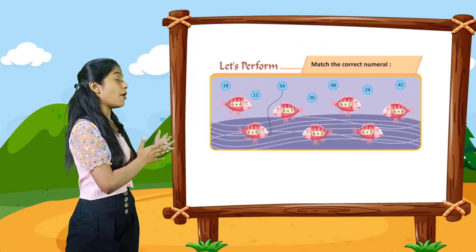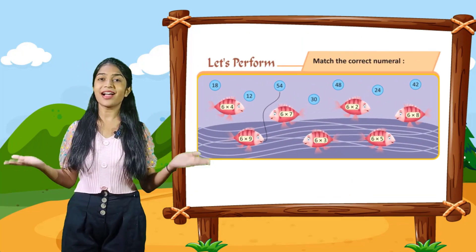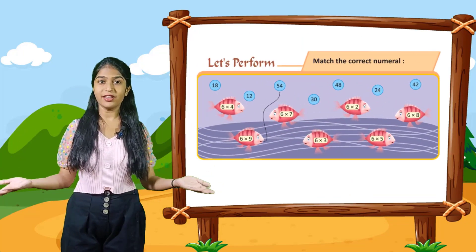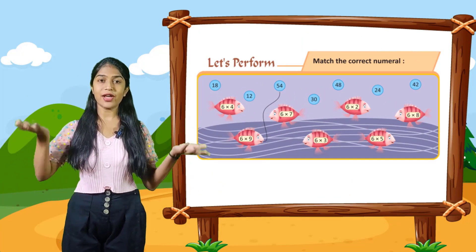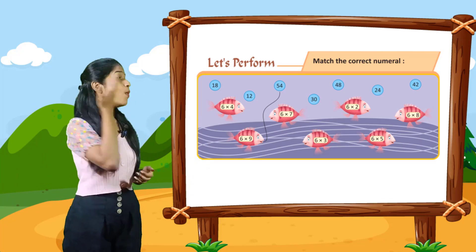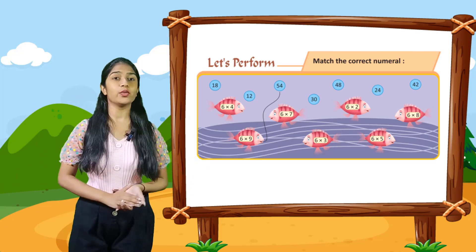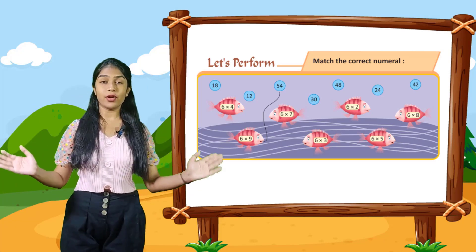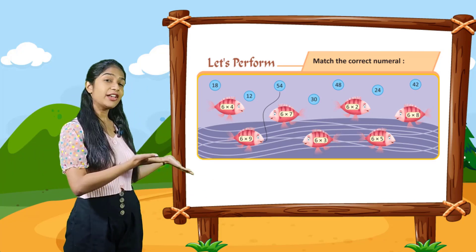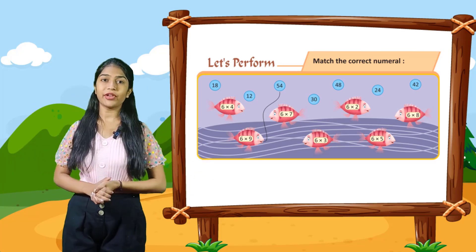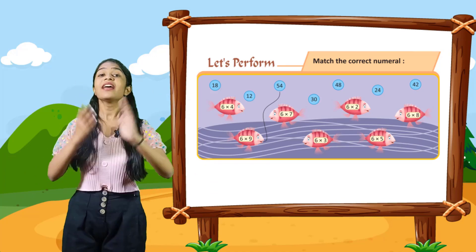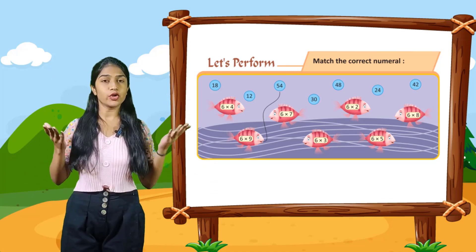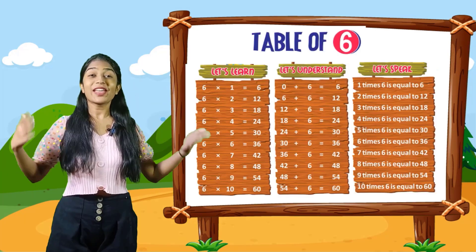Now let's perform. Match the correct numerals. You have to match the correct numerals. For example, 1 is done for you: 54. Here 6 into 9 is 54, so you have to match 54 with 6 into 9. Rest you have to do yourself.